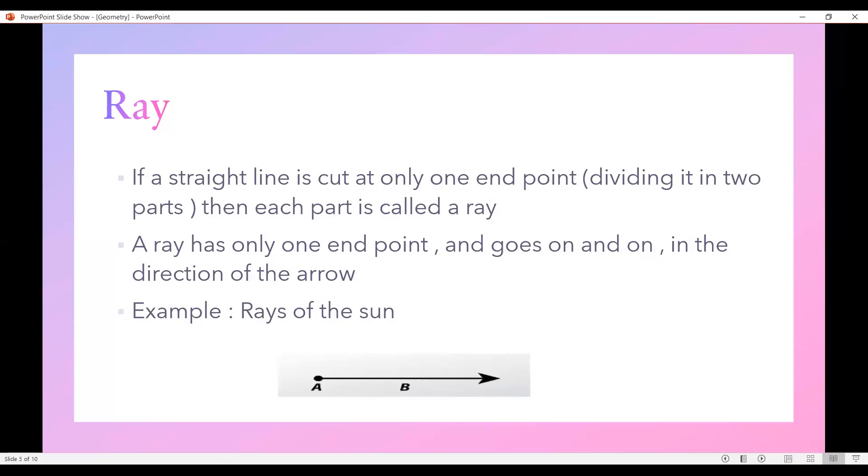If a straight line is cut at only one end point, dividing it in two parts, then each part is called a ray. A ray has only one end point and goes on and on in the direction of the arrow. So here I am having a ray. Look, it was a straight line but I cut it at only one end point, divided it into two parts, then each part is called a ray.